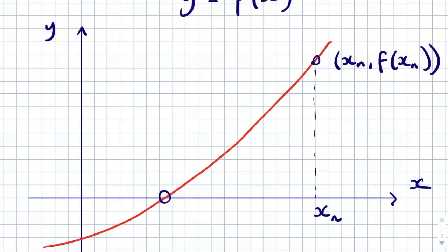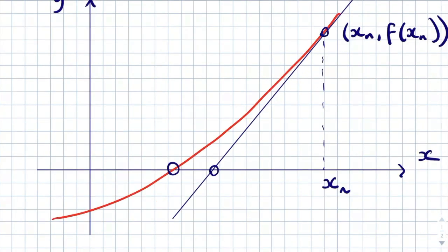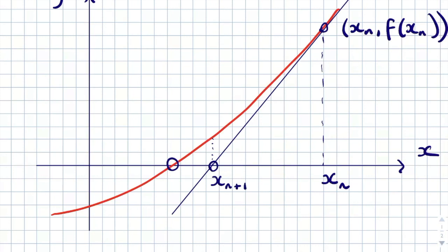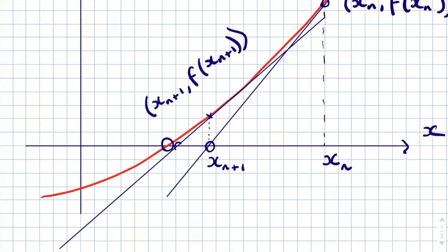He then differentiated that function to form a tangent at that point. Drawing a tangent at that point, you can see it crosses the x-axis at a point much closer to the solution. This next x value is called x_{n+1}, with coordinate (x_{n+1}, f(x_{n+1})). Drawing another tangent there, it crosses even closer. Each iteration gets closer to the solution, and the more iterations you do, the more accurate your answer will be.